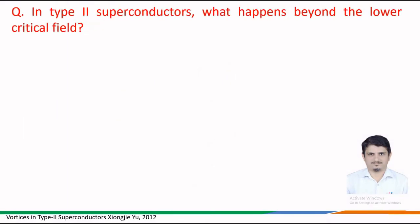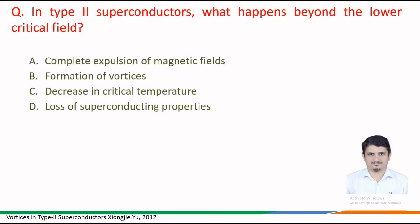Next question: in type 2 superconductors, what happens beyond the lower critical field? The options given are: option a, complete expulsion of magnetic fields; option b, formation of vortices; option c, decrease in critical temperature; option d, loss of superconducting state.